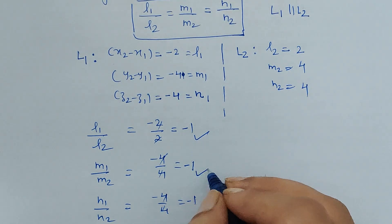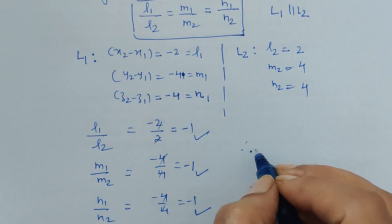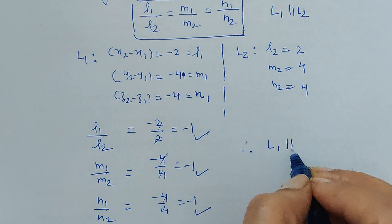So here we see that all the ratios are equal in nature. Therefore, the lines are parallel to each other. Thank you.